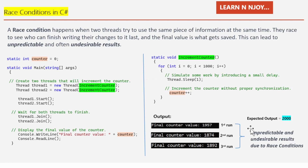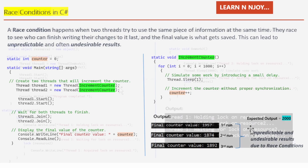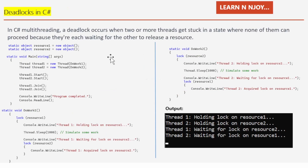Now let's look at deadlocks in C# multi-threading. A deadlock occurs when two or more threads get stuck in a state where none of them can proceed, because they are each waiting for the other to release a resource. Let's understand with the example shown here.